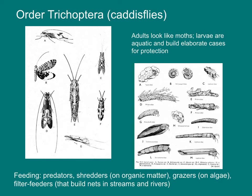The order Trichoptera, the caddisflies, are closely related to butterflies. Instead of having scales on their wings, they have hairy wings. Their larvae are all aquatic and they build elaborate cases of wood, pebbles, and stones — the case protects the larva as it grazes on aquatic algae or plants. Caddisflies have a diversity of feeding strategies: there are predators, shredders, grazers, and filter feeders. Filter feeders build nets in streams and rivers to capture small organic matter moving through the water column.